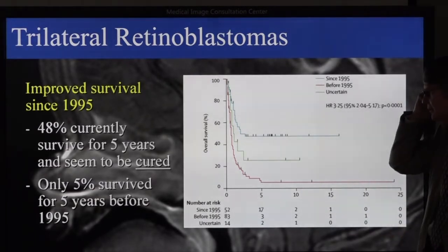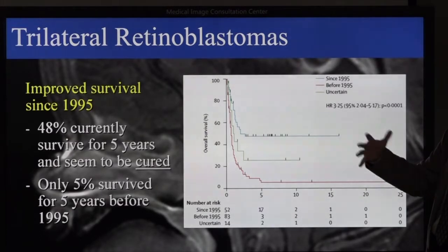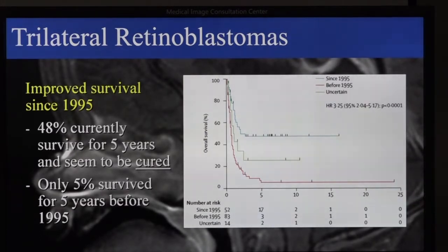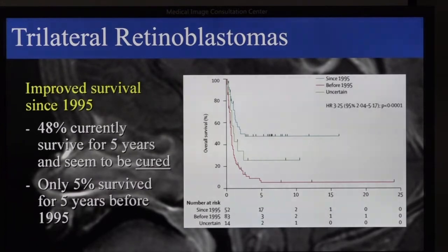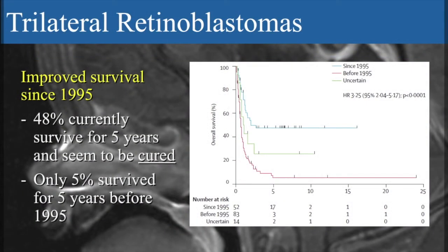The green line represents cases where it is unclear whether the treatment was before or after 1995. The survivors are mostly those who received high-dose chemotherapy with stem cell rescue, almost exclusively. But there are a few cases where additional radiation was given and cases where it was not, and cases that were biopsied before treatment and cases not touched by surgery — so there is much variation within that, even though the chemotherapy involved stem cell rescue.